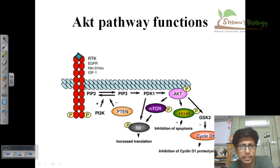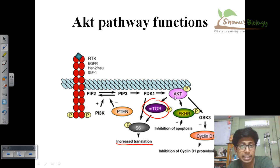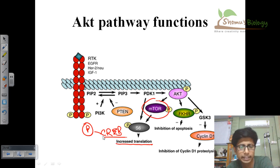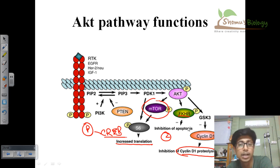The final thing to address is the importance of the AKT pathway. First, it promotes increased translation of all genes necessary for the cell to grow, divide, and proliferate. AKT does this via mTOR, because AKT cannot directly interact with transcription factors — it must phosphorylate mTOR, which then activates S6 and CREB (transcription factors). Once phosphorylated, these help translate all the important proteins inside the cell. The second importance is inhibition of apoptosis, blocking proteins like Bad and FKHR through phosphorylation. The third is inhibition of cyclin D1 proteolysis, allowing the cell cycle to proceed to completion.